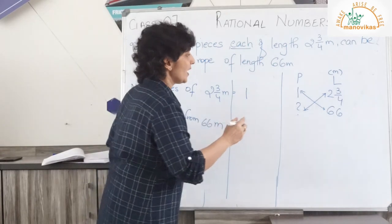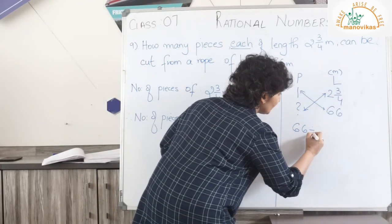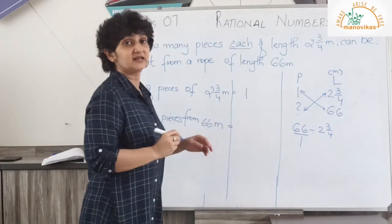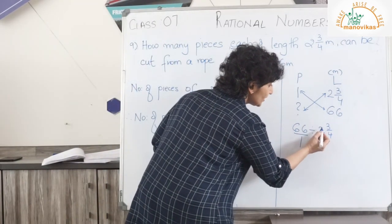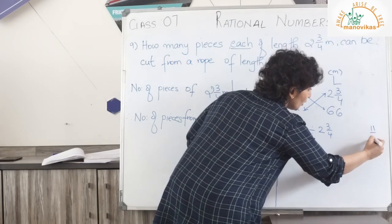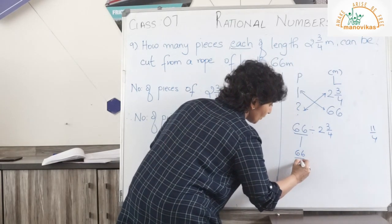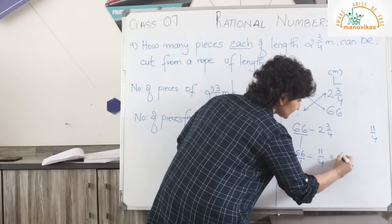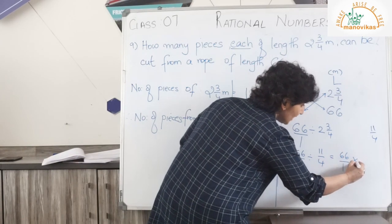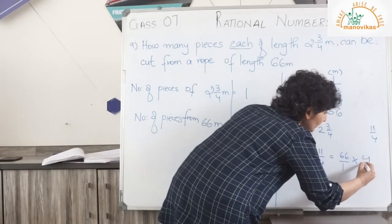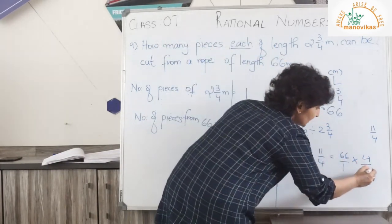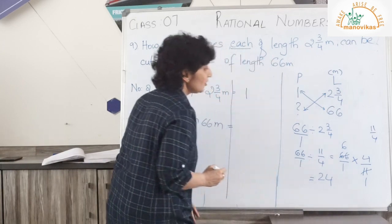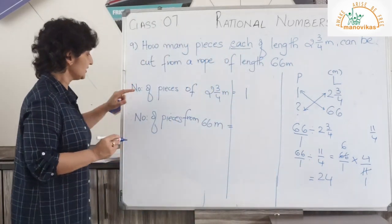So it is 66 upon 1 divided by 2 and 3 quarters. Converting: 4 twos are 8 plus 3 gives 11 upon 4. Rewriting: 66 upon 1 multiplied by 4 upon 11 (the reciprocal). Now, 11 goes into 66 six times, and 6 fours are 24. So I get 24 pieces.